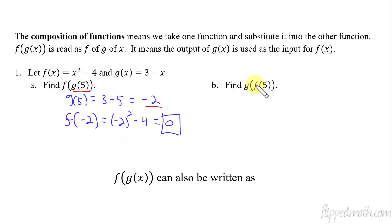Now this one, I've switched it up. So it's not f of g, it's g of f. So this time we'll start with the function f and we plug in the 5. So there's my function f, x squared minus 4, 5 squared minus 4. So that's 25 minus 4, that's 21.